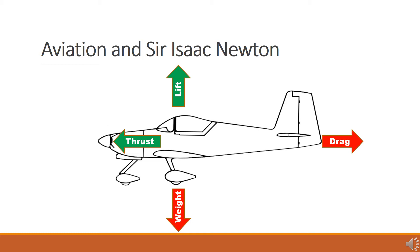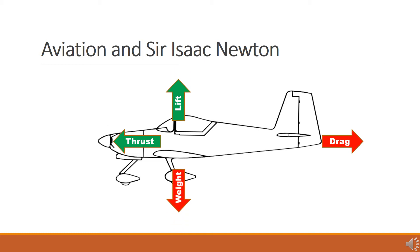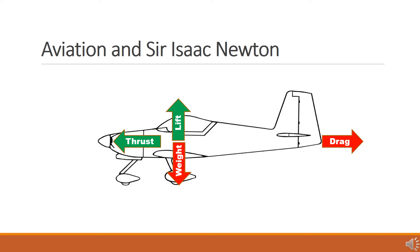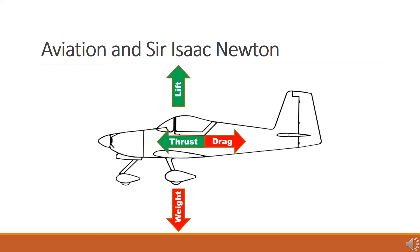Applying Newton's first law of motion to these four forces, we can see how it applies to an aircraft in motion. If the lifting force is equal to the downward force of weight, the aircraft will maintain a constant altitude. If the thrust force is equal to the force of drag, then the aircraft will move at a constant velocity.